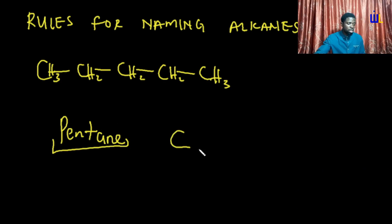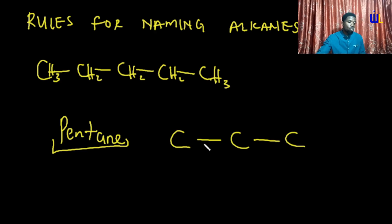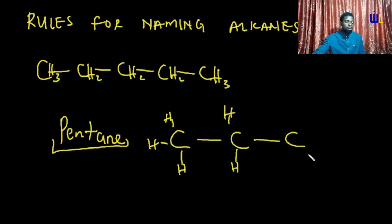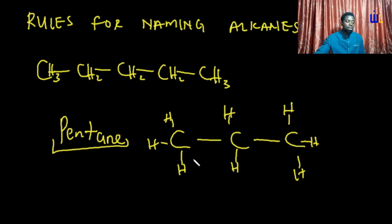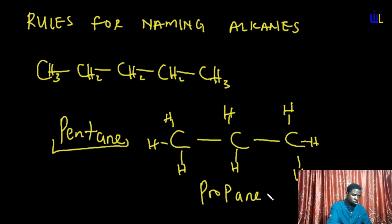Let's consider another straight-chain alkane. Imagine we have a chain of one, two, three carbon atoms. Remember, carbon can only form four bonds. Here the remaining three bonds are attached to hydrogen; the middle carbon has two bonds to neighbors so two hydrogens remain; and the end carbon similarly. According to the rule, the infix for three carbon atoms is 'prop,' and because it's an alkane you attach '-ane' — giving propane. Rule number one is all settled.